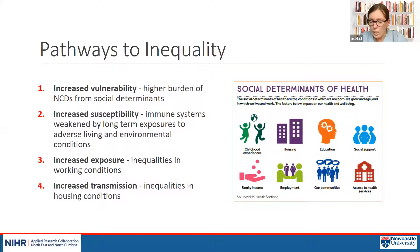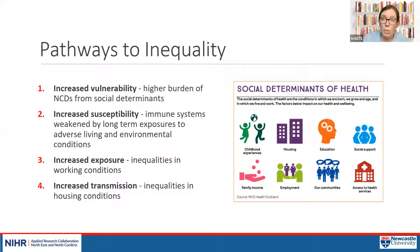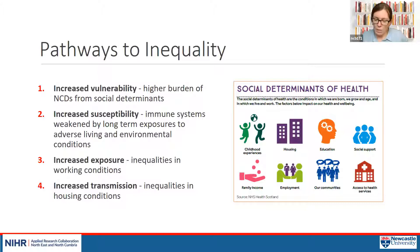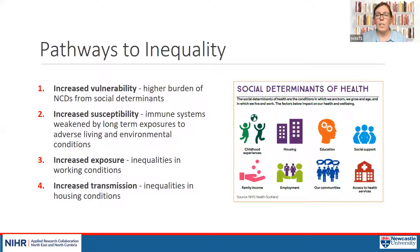The third pathway is increased exposure: worse outcomes in certain occupations relate to working conditions. Many people in low-income neighbourhoods are key workers who cannot work from home, often working in customer-facing roles such as leisure or retail, and exposed further through using public transport. The fourth pathway is increased transmission: having less space at home and greater overcrowding. People from deprived and ethnic minority populations are more likely to live in urban environments, and previous research on H1N1 in 2009 showed a strong relationship between adverse outcomes and urbanity.